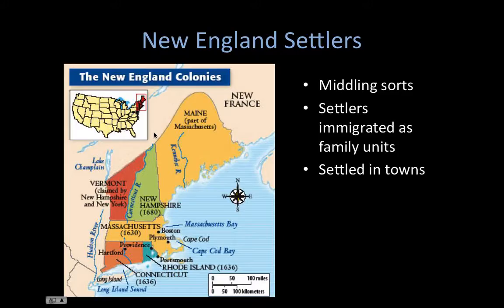In addition to providing defense, concentrating people into towns allowed them to support public schools and churches, and it allowed neighbors to supervise each other and ensure no one was doing anything immoral. So this is really how we see New England being settled — by middle-class people, in families, and in towns.